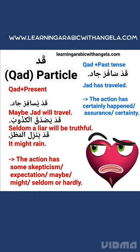With the present tense, قد implies scepticism — that the action could or could not happen, or may or may not happen. For example, قد يسافر جاد means 'Maybe Jad will travel.'